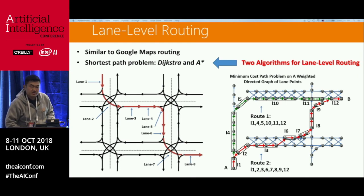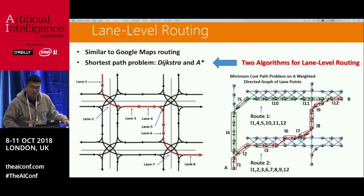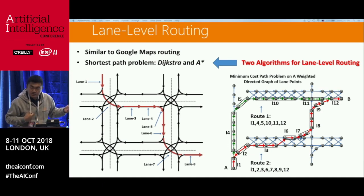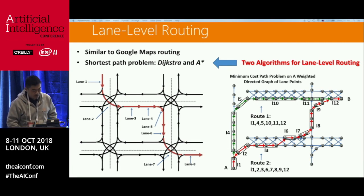When we talk about routing today, you pull out your Google Maps and route from one place to another — that's road-level routing. But for autonomous cars, you need lane-level routing, because on the same road there are different lanes. The vehicle has to understand which lane it travels in. It uses traditional algorithms such as Dijkstra and A-star, but fine-tuned to perform well on a vehicle.